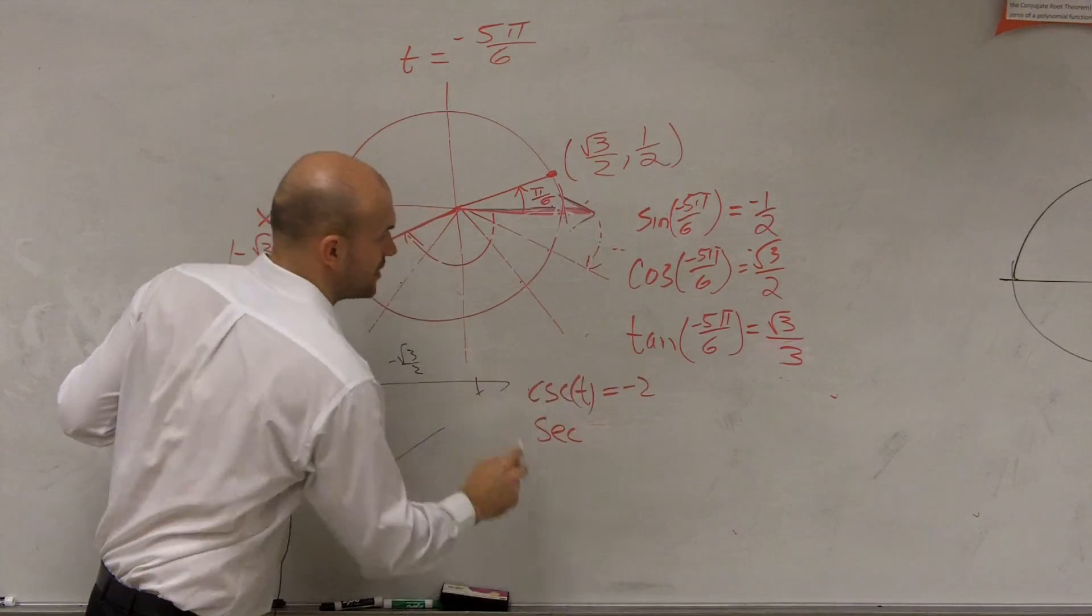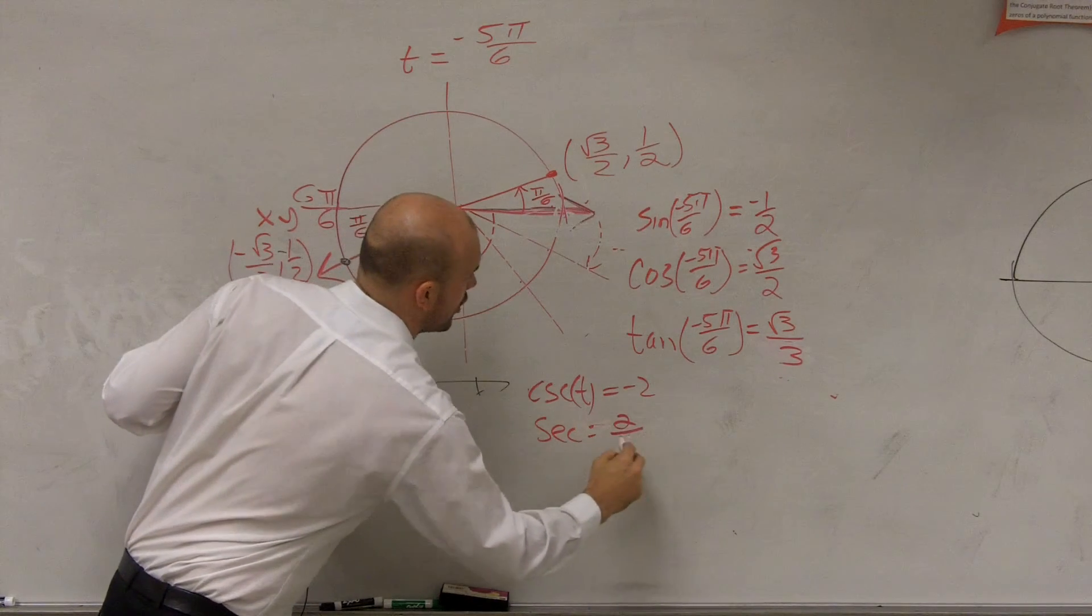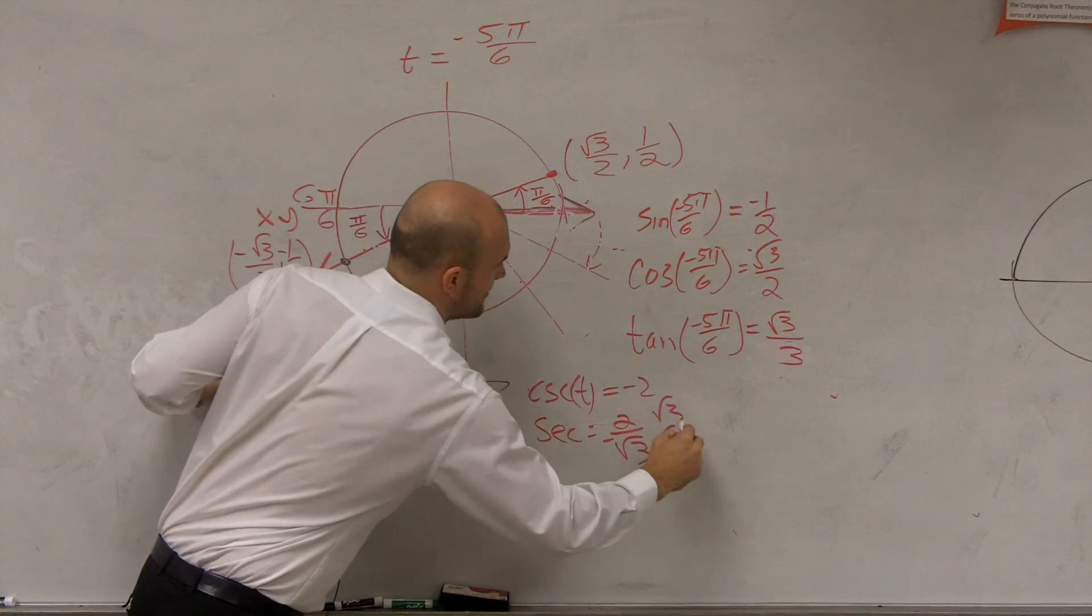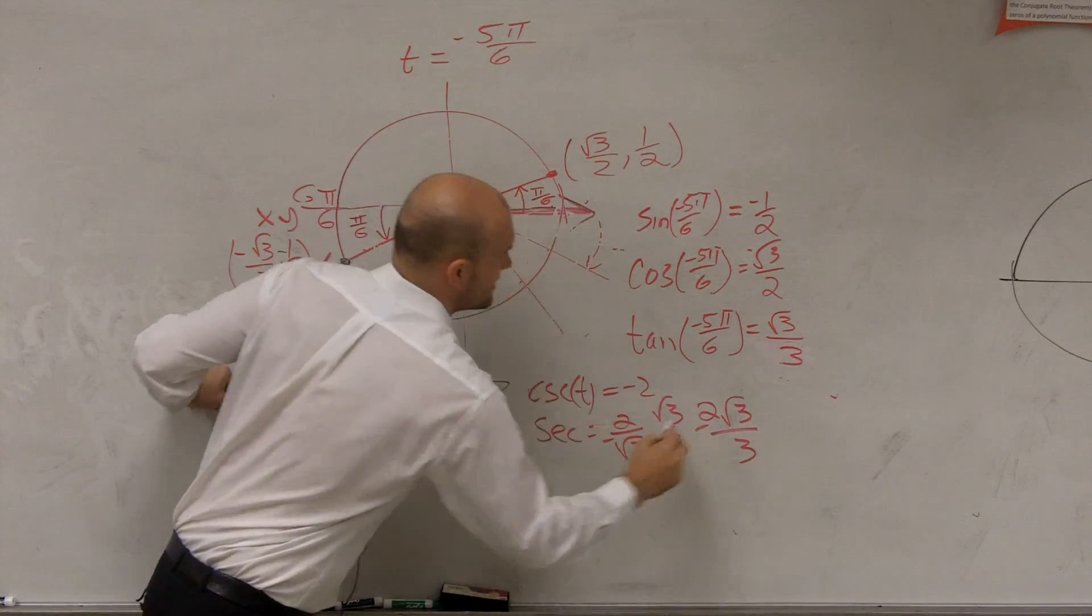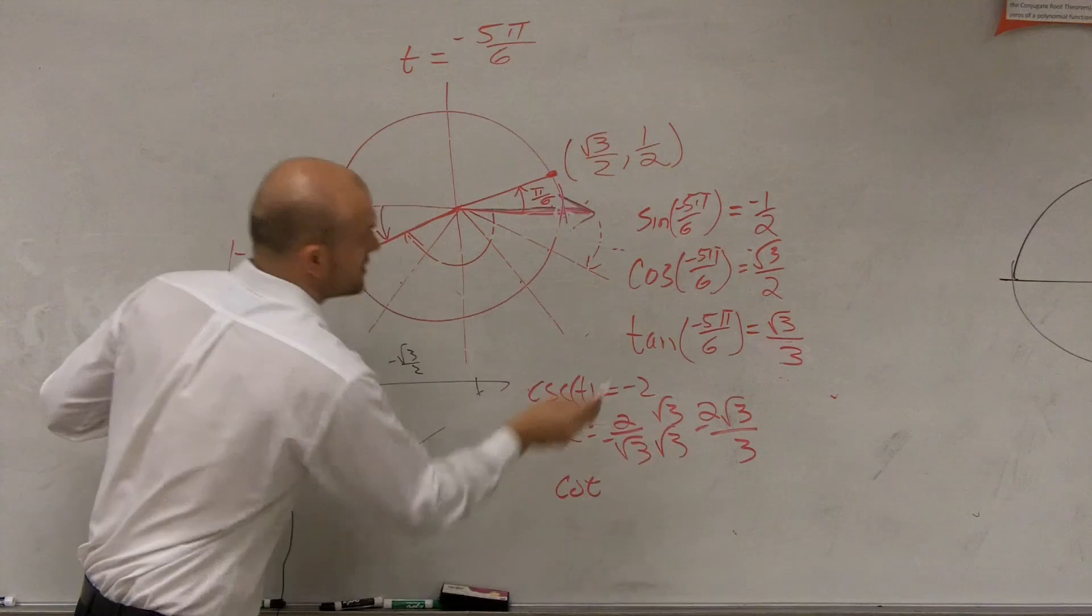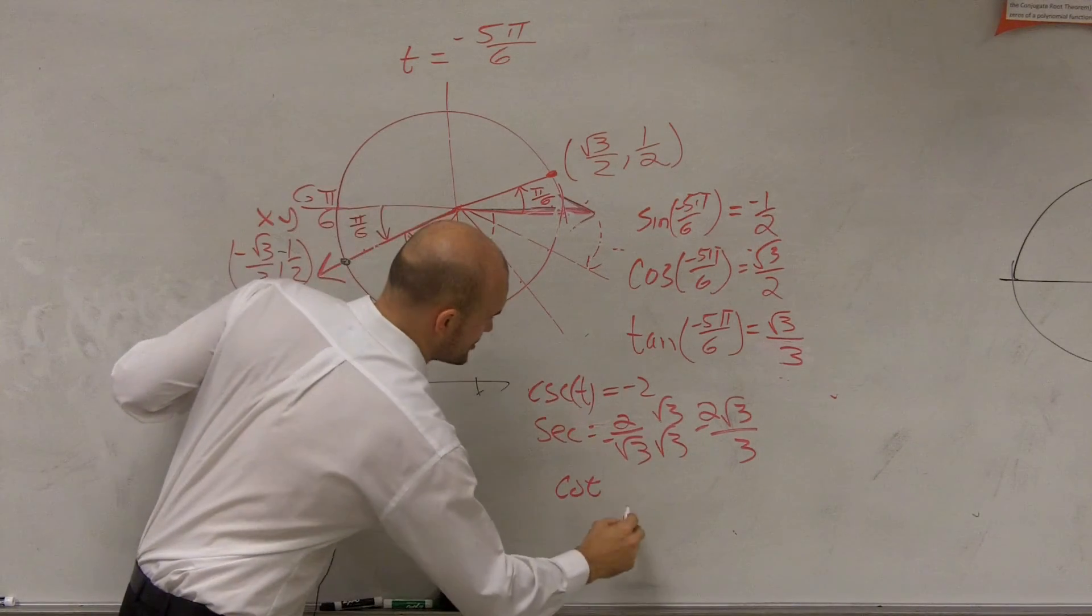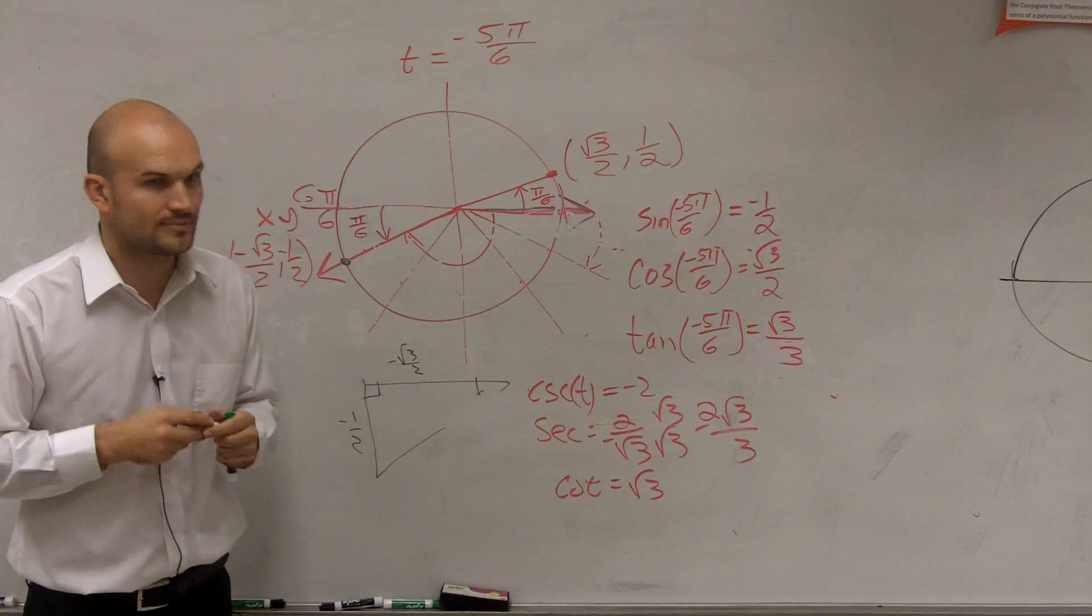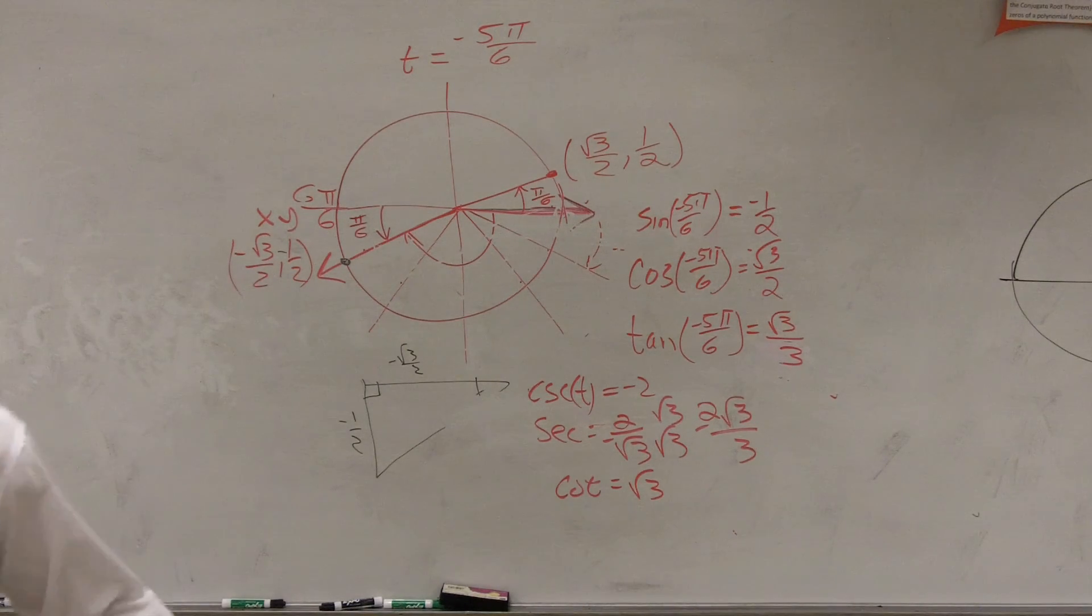Secant is the reciprocal of cosine, which is going to equal 2 over radical 3. You cannot do that. Rationalize the denominator. So you have 2 radical 3 over 3 negative, and cotangent is the reciprocal of that, which is just going to equal the square root of 3 when you go ahead and multiply it out. So you guys can go and figure out that math when you want to.